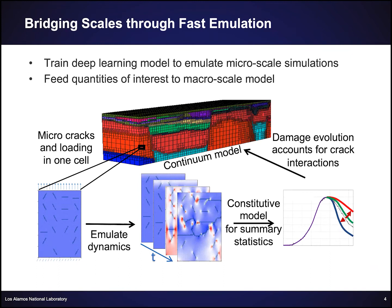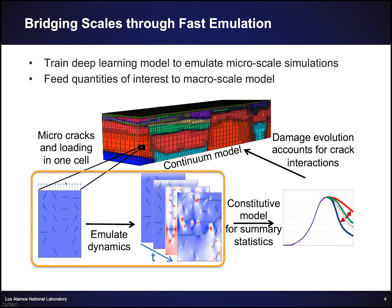Our workflow for bridging scales uses a continuum model where individual cells require accurate modeling of micro cracks within each cell. This talk focuses on how we predict dynamics at the micro scale level to feed into that continuum model. The continuum model needs summary statistics from the stress and damage simulation, so our goal is to emulate the simulation — predicting full stress and damage fields over time — and evaluate both how well we emulate the full process and how well we reconstruct the summary statistics.